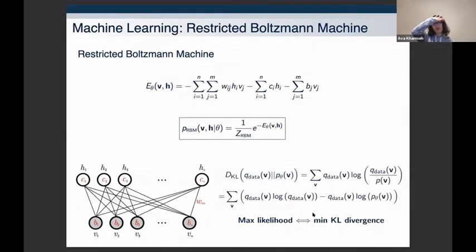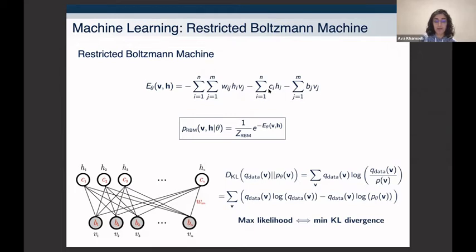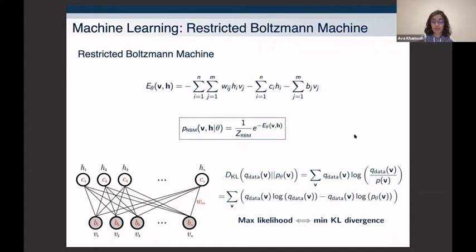Restricted Boltzmann Machines are neural networks with a very simple structure: only two layers — visible nodes and hidden nodes. The visible layer is connected to the hidden layer via weights w_ij, with bias terms c_i for the hidden nodes and b_i for the visible nodes. The word 'restricted' refers to the fact that there is no connection between nodes within the hidden layer or within the visible layer. As the name suggests, the probability distribution follows a Boltzmann distribution with the corresponding energy function.